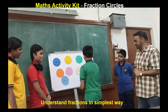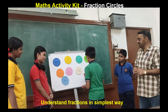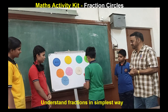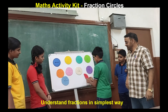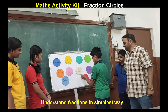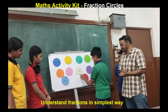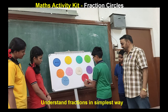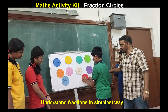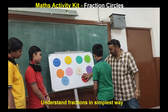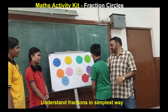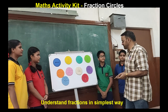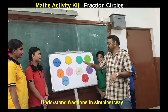This is the last one — 10 equal parts. We will check: 6th, 7th, 8th, 9th, and the last one is 10. So we are getting a complete circle again. The whole is divided into 10 equal parts, and each part is equal to what fraction? 1 by 10, right? So this is the activity based on fractions. Thank you.